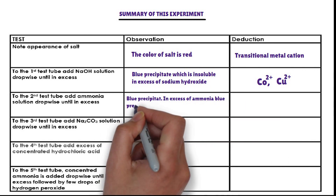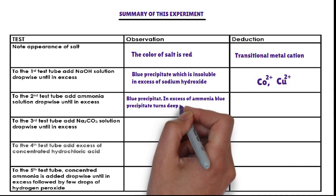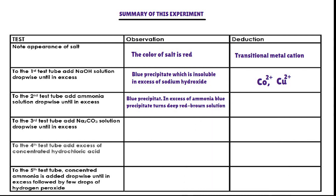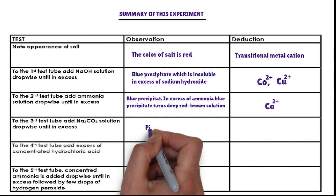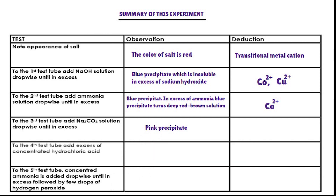The cation that forms a blue precipitate with ammonia solution and the precipitate turns to a deep red-brown solution in excess of ammonia is cobalt-2 ion. To the third test tube, sodium carbonate solution is added dropwise. The cation that forms a pink precipitate with sodium carbonate solution, insoluble in excess of sodium carbonate, is cobalt-2 ion.